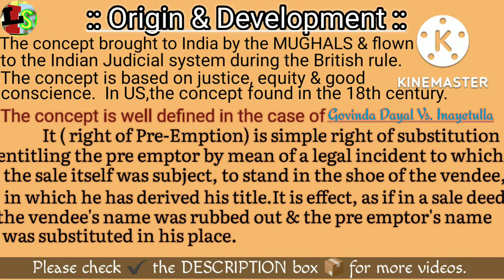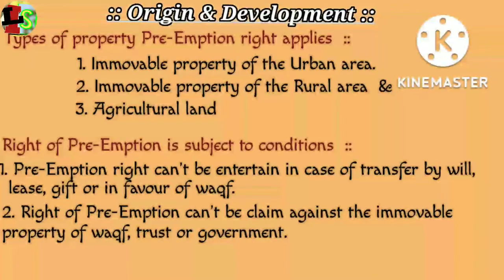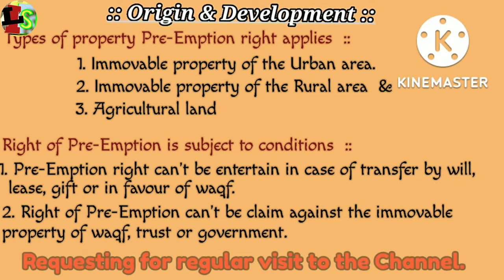The question is what set of people have the right of preemption. Generally, two sets of people can raise the claim of preemption: one, the co-sharer; and two, the owner of the adjoining property. Generally, there are three types of properties where the right of preemption is applied: one, immovable property of the urban area; two, immovable property of the rural area; and three, agricultural land.